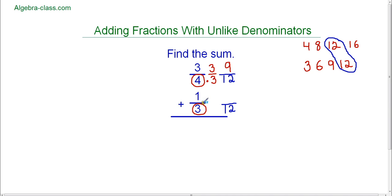We're going to do the same thing here. Three times what is twelve? Three times four. So since I'm multiplying by four in the denominator I'm going to multiply by four in the numerator. And then one times four is four. So one-third and four-twelfths are exactly the same number just written differently.